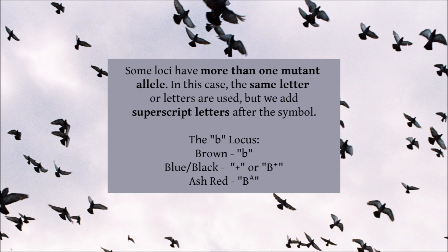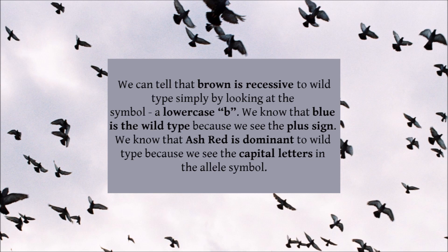The mutant symbol for this locus is 'b', so you may hear it referred to as the b locus. Brown, being recessive to the wild type, is simply given a lowercase b. Blue, being the wild type, can simply be noted with a plus sign, or a capital B followed by a superscript plus sign. Ash red is dominant to the wild type, so it gets a capital B followed by a superscript capital A. We can tell that brown is recessive simply by looking at the lowercase symbol, blue is wild type because of the plus sign, and ash red is dominant because of the capital letters — all from the symbols alone.